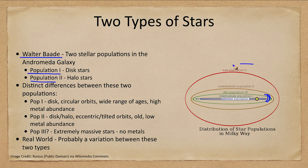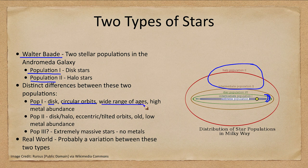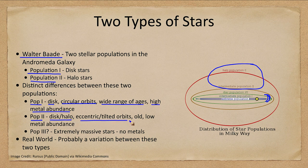Population I are the disk stars with circular orbits. They have a wide range of ages — very young or very old — and they have a high metal abundance. Remember, metals means anything that is not hydrogen or helium, so these are stars like our own Sun that have lots of heavier elements. Population II stars are found in the disk or halo, have eccentric or very tilted orbits, are old, and have a low metal abundance.